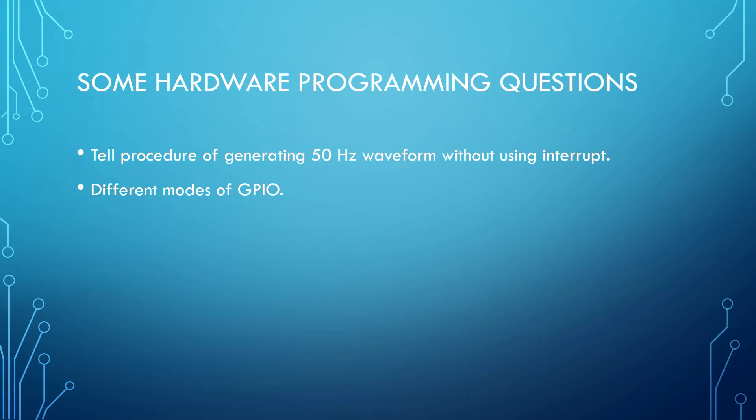Some hardware programming questions were also asked in this round. One was: describe the procedure for generating a 50 Hz waveform without using interrupts. Another was about the different modes of GPIO. A 50 Hz waveform can be generated using output compare, or you can use a timer as well. The different GPIO modes are: GPIO input, GPIO output, analog mode — where you can use ADC to read analog signals — and alternate function mode, where GPIOs can be used for peripherals like UART, timers, SPI, or I2C.